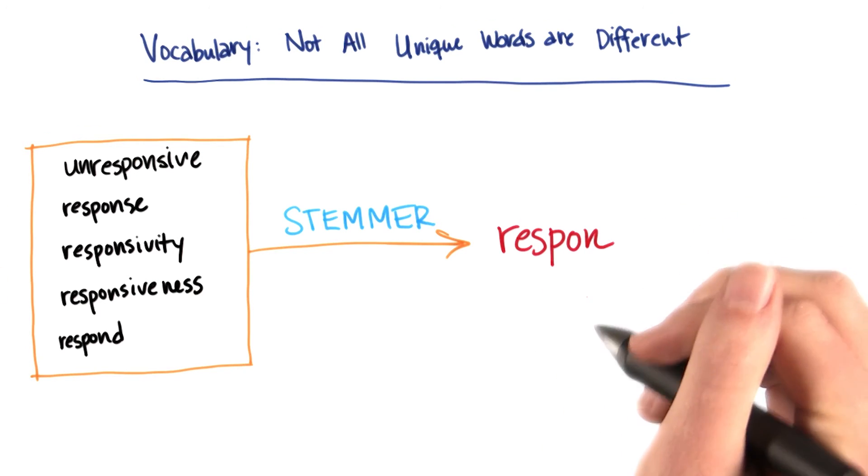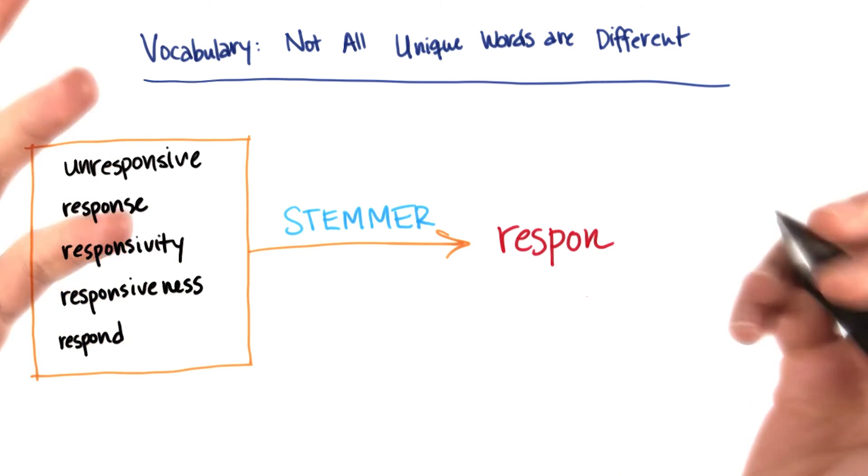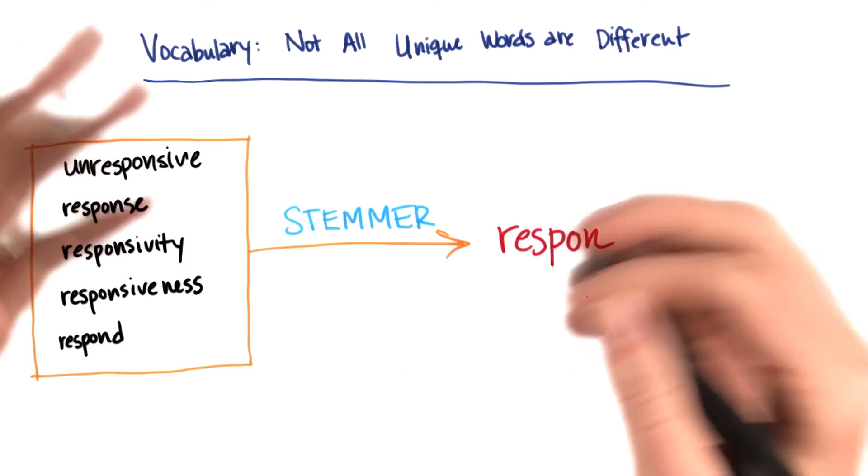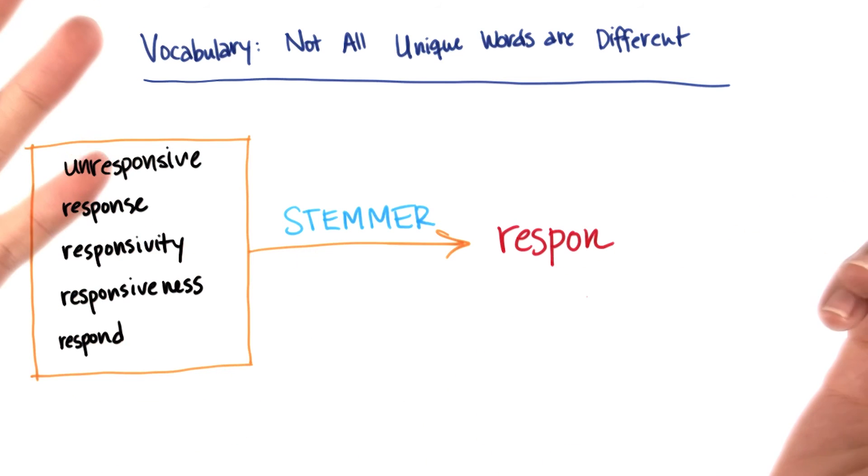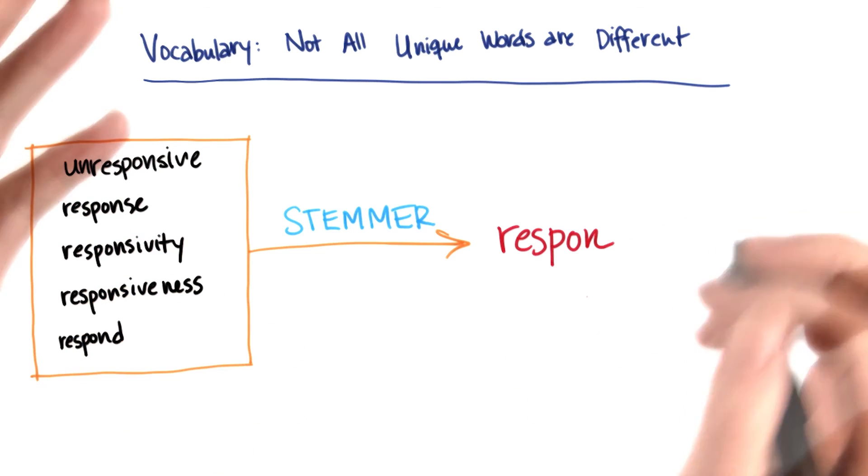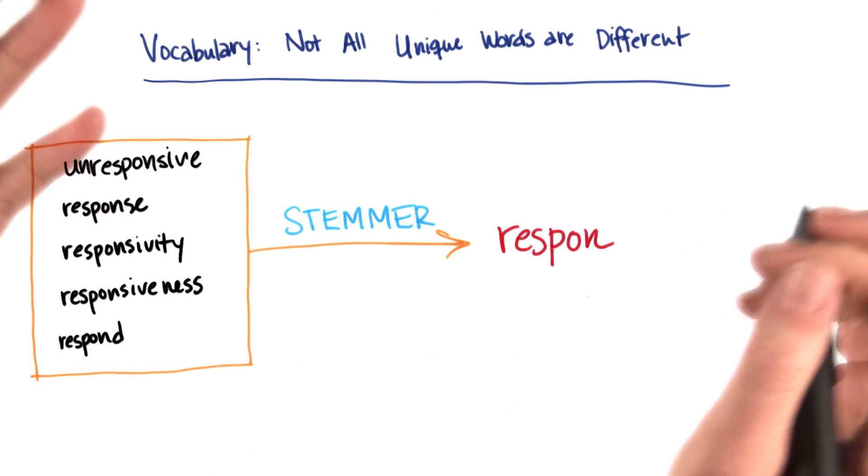And so usually what we do in machine learning is we take one of these stemmers off the shelf from something like NLTK or some other similar text processing package. And we just make use of it, not necessarily always going into the guts of how it works.